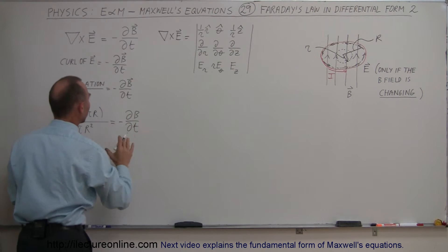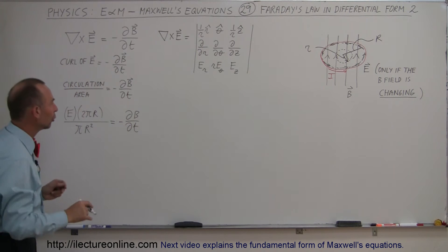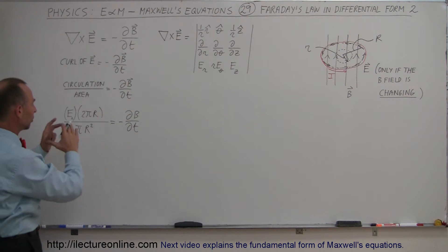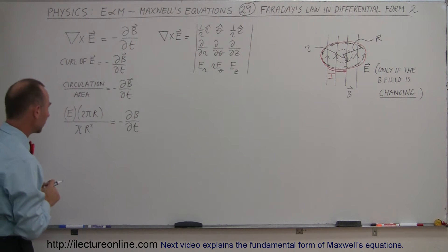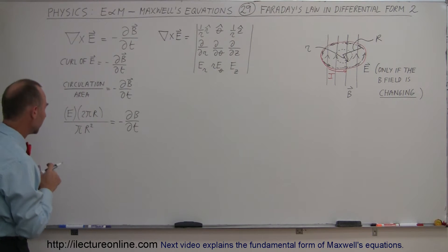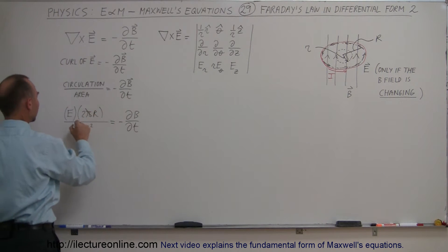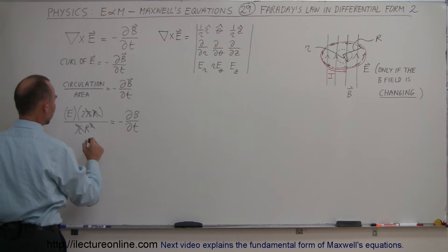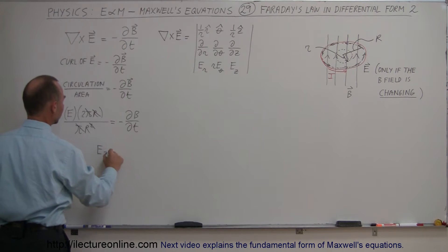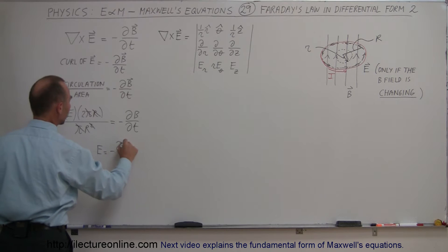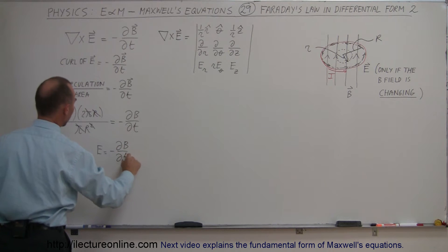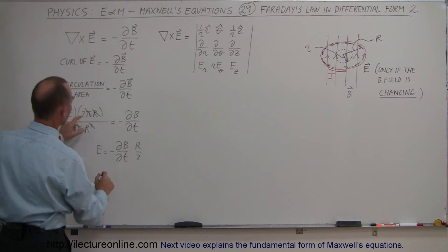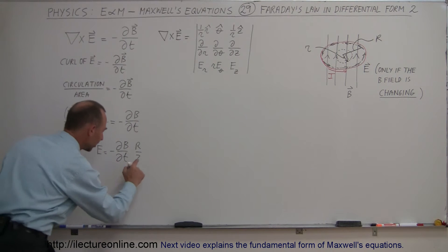Writing that as a magnitude only — dropping the vector arrow — the magnitude of the electric field equals that expression. Simplifying: the pi's cancel out and one of the R's cancels, so we can say the electric field is equal to the negative change of the B field with respect to time, times R divided by 2.